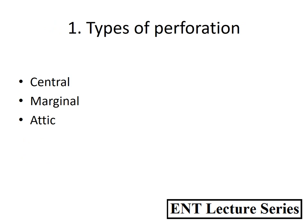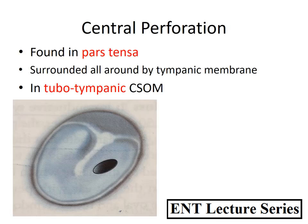By type, perforation can be central, marginal, or attic. A central perforation is found in the pars tensa and by definition is surrounded on all sides by tympanic membrane, as seen in the figure. This type is seen in the tubo-tympanic type of chronic suppurative otitis media (CSOM), and most often in the anterior inferior quadrant, because the Eustachian tube opening is in the anterior wall of the middle ear.